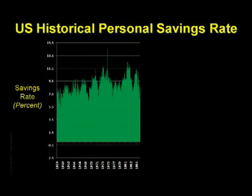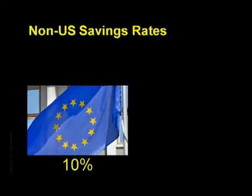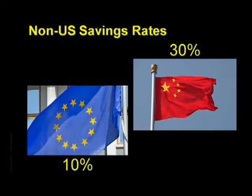This is a chart of the personal savings rate stretching back to 1959. The personal savings rate is the difference between income and expenditures for all U.S. citizens, expressed as a percentage. So a number like 10% indicates that for every dollar earned, 10 cents was saved, not spent. Note that the long-term historical average for U.S. citizens between 1959 and 1985 was 9.2%. For comparison, in Europe that number is around 10%, and in China a stunning 30% of income is saved.